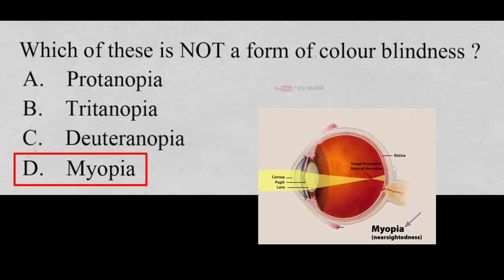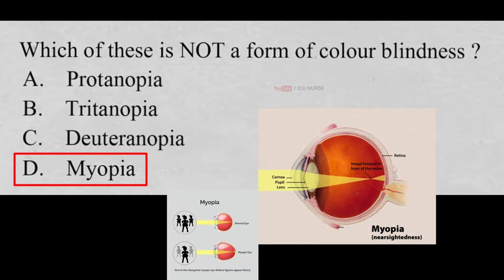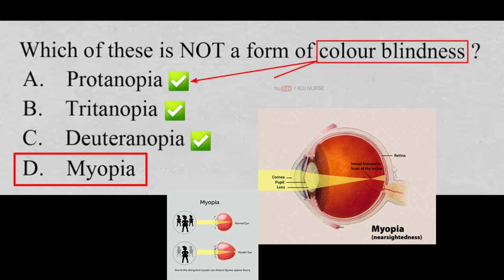Myopia is also known as nearsightedness. Myopia is a common vision condition in which you can see objects near you clearly but objects farther away are blurry. Whereas Protanopia, Tritanopia, and Deuteranopia are different kinds of colorblindness.